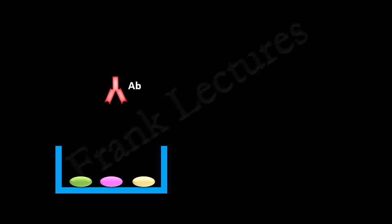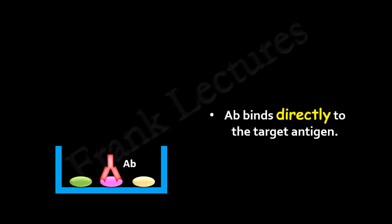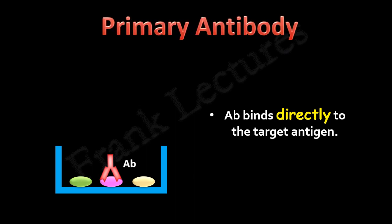Primary antibody. Suppose these are three different antigens immobilized in a microtiter well, and this is the antibody specific to one of these antigens. We add this antibody in the well. This antibody will recognize its target antigen, and antigen-antibody binding will take place. So here we saw that the antibody directly binds to its target antigen. This antibody is known as the primary antibody.